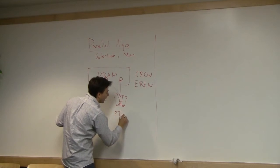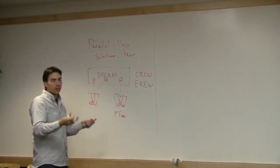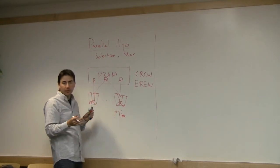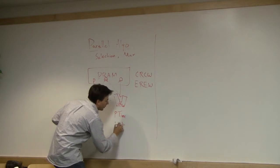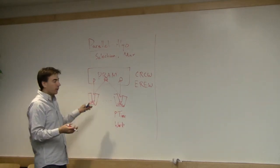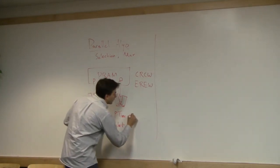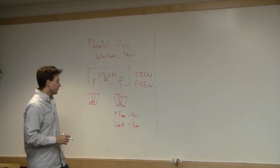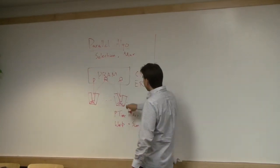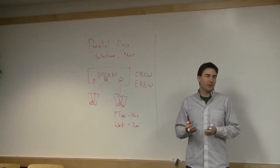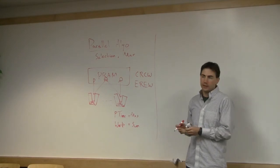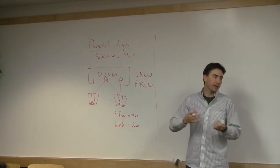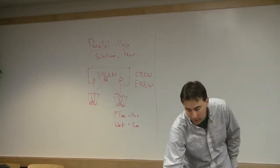We'll be looking at two quantities: the parallel time — that's the number of time steps that any one processor has to make to complete some part of the algorithm — and the work, which is the sum of all operations that all processors do. The parallel time is essentially the max over processors, and work is the sum over all processors. For simplicity, we'll assume we have as many processors as we need. If that's not true, you can break things up and do them sequentially on the processors you do have, and you'll get as good a speedup as possible.